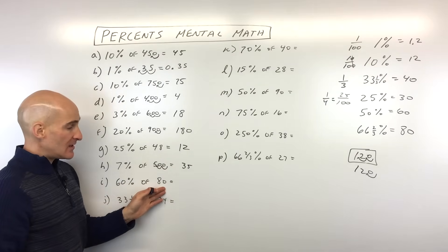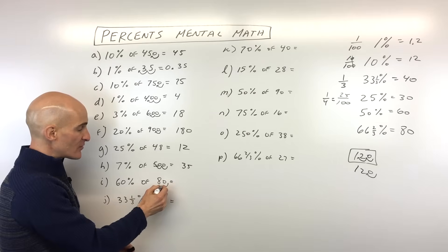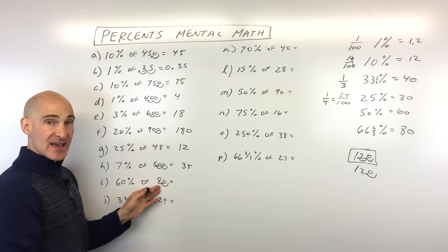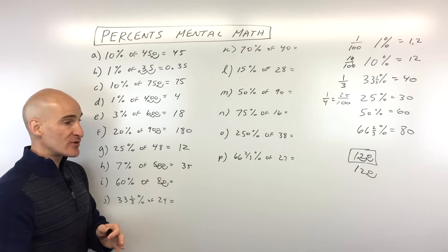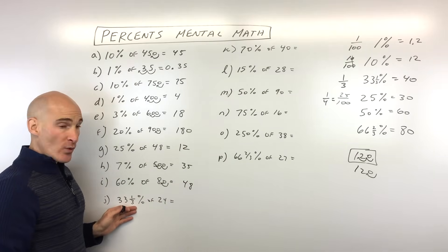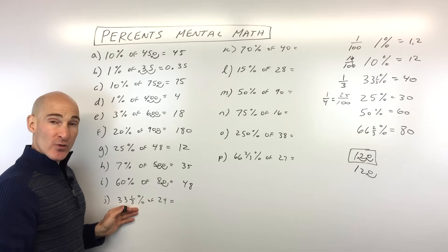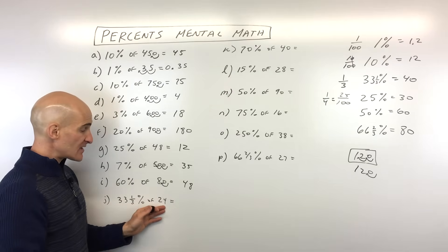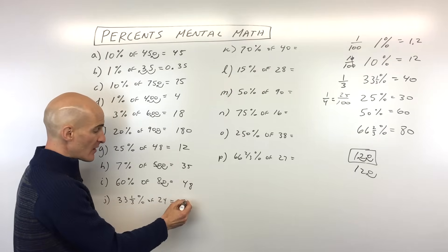60% of 80. Let's find 10% of 80. 10% we move the decimal one place to the left. That's 8. 60% is 6 times 10%. 6 times 8 is 48. 33 and 1 third percent of 24. 33 and 1 third percent is 1 third. That's like dividing by 3. 24 divided by 3 is 8.